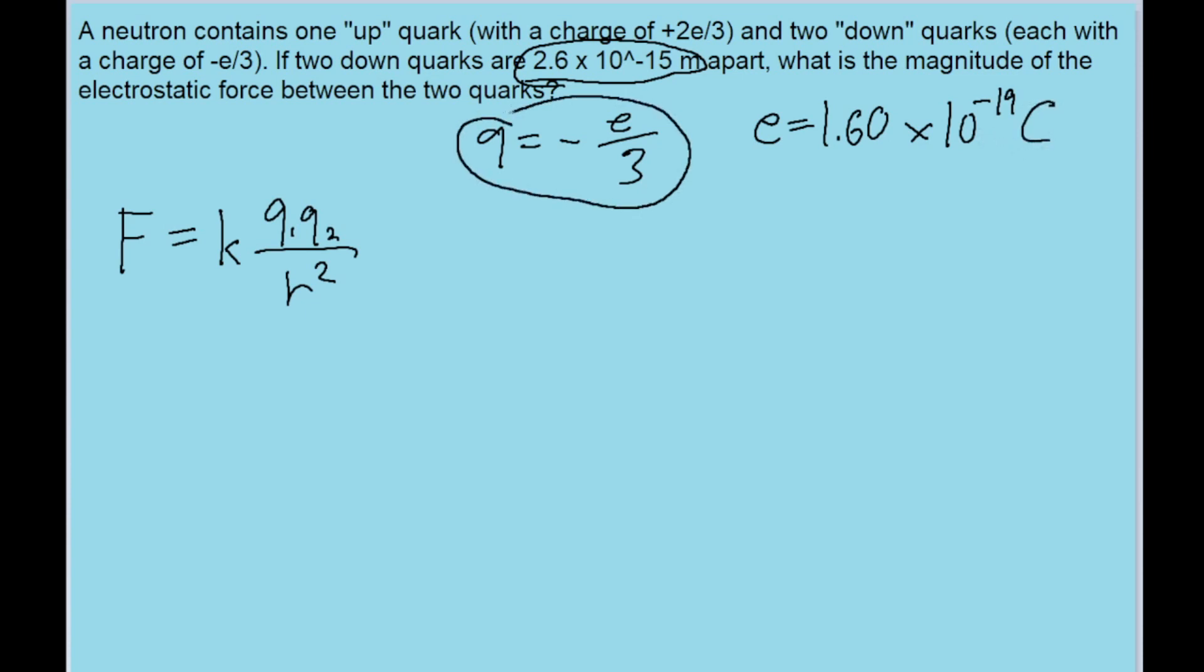This is the value that we will use for both q's, both q1 and q2. And lastly, you also should know that k, the Coulomb constant, is equal to 8.99 times 10 to the power of 9 newton meters squared per Coulomb squared.